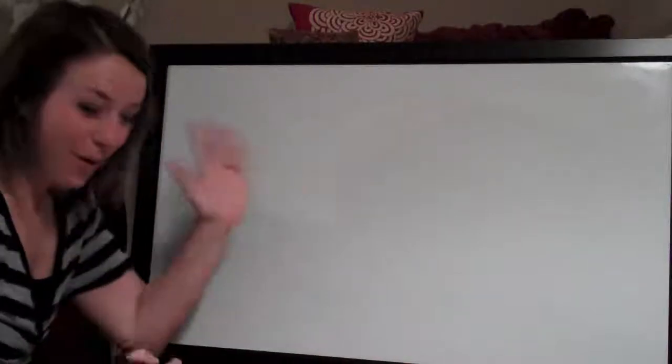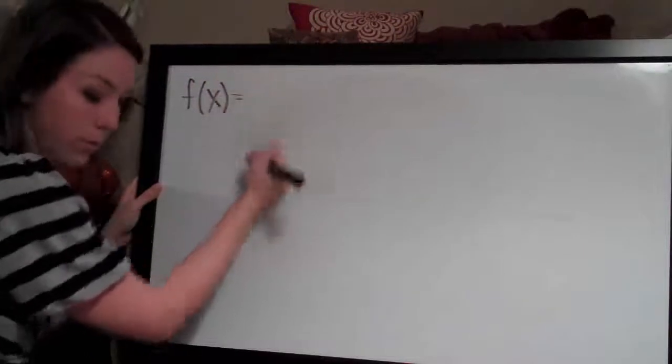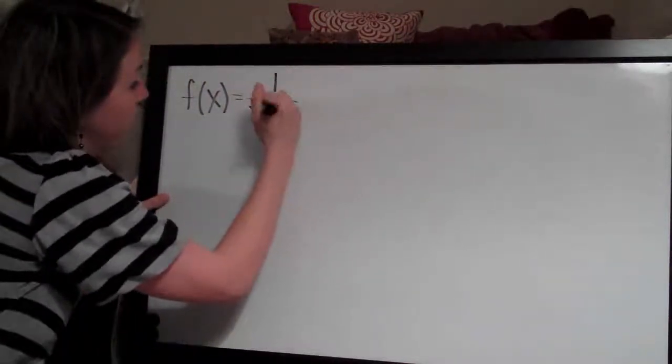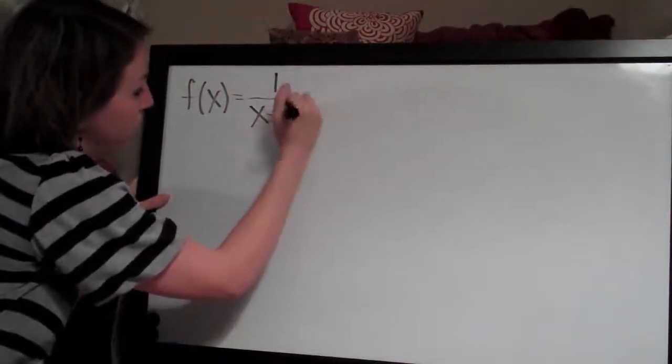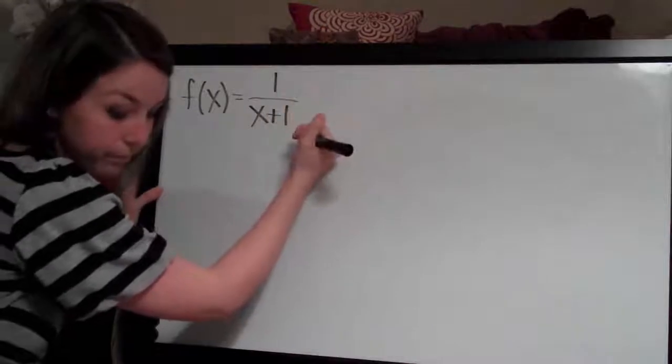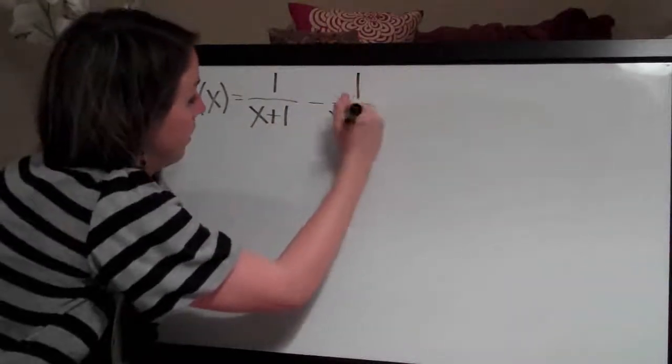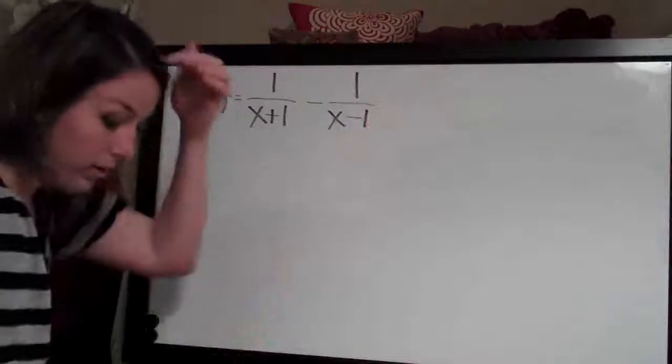Hey everybody! Welcome back. We're going to keep going with quotient rule problems. This one is a little bit different. It is f of x equals 1 over x plus 1 minus 1 over x minus 1.